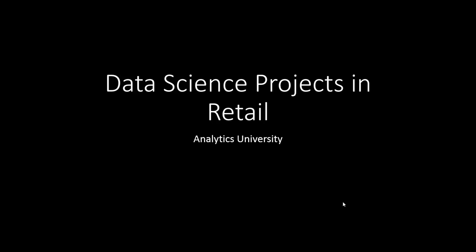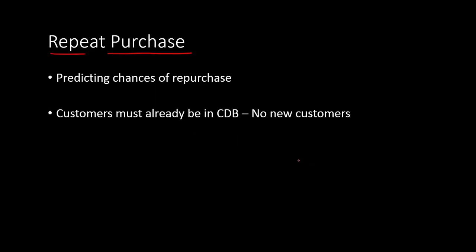In this video, I'm going to talk about the different types of data science projects that you can do in the retail industry. The first one is the project on repeat purchase — it's very popular in the retail industry where people do research on customer data to find out who could be a potential loyal customer. It's basically a prediction problem.